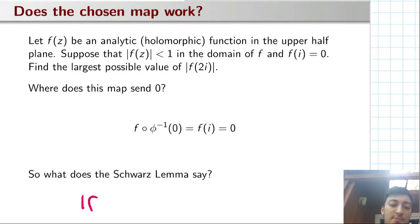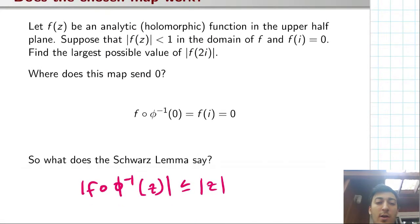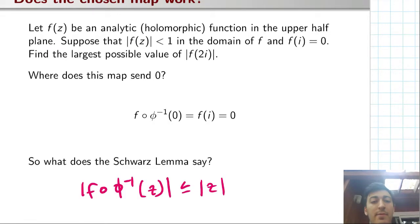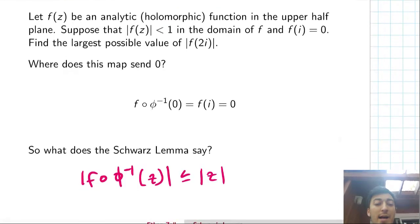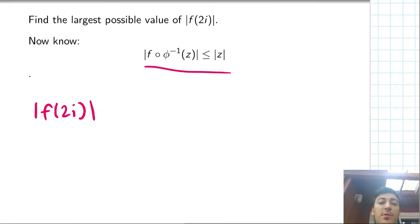Let's just take a look at what that says. Well, |f ∘ φ^(-1)(z)| for any z in the disk, the modulus of this creature is going to be bounded above by the modulus of the input z. So inherently, we're not quite sure what to do with this, but maybe this can give us some information somehow about 2i.